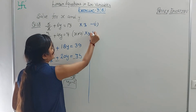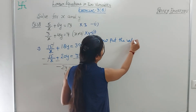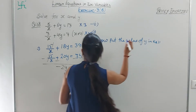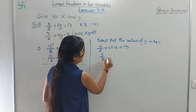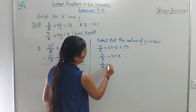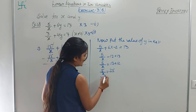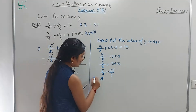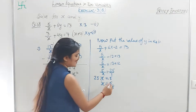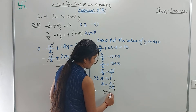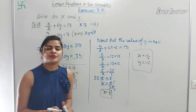Now put the value of y in equation 1: 5/x + 6·(-2) = 13. So 5/x - 12 = 13. Therefore 5/x = 13 + 12 = 25. Cross multiply: 25x = 5. That means x = 5/25 = 1/5. So x = 1/5 and y = -2.